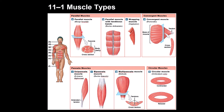An example of a general parallel muscle is the biceps in the arm. Another type is parallel muscles with tendinous bands, where muscles attach to tendons — an example is the rectus abdominis in the abdomen. The third subtype is the wrapping muscle, located in the forearm area.